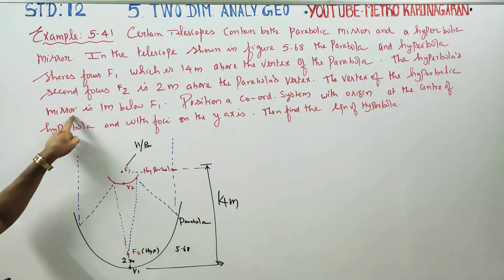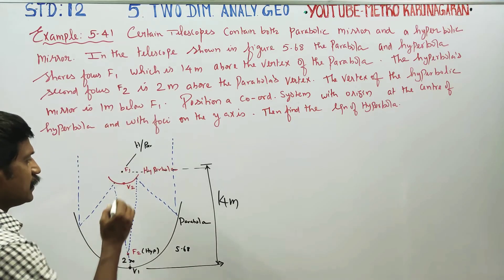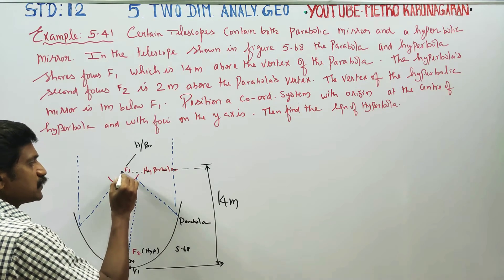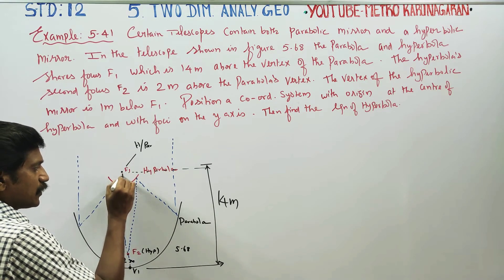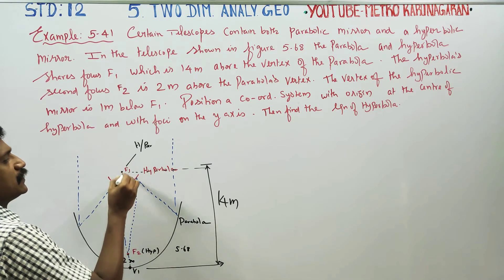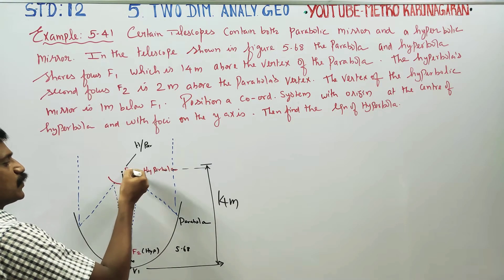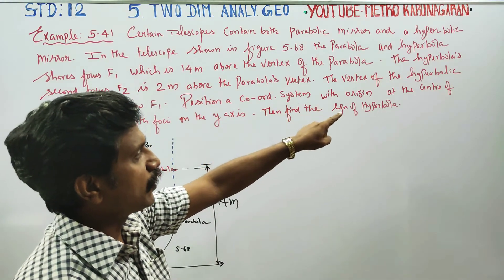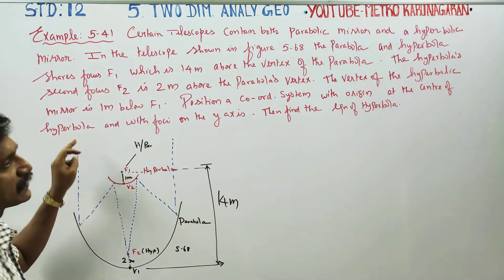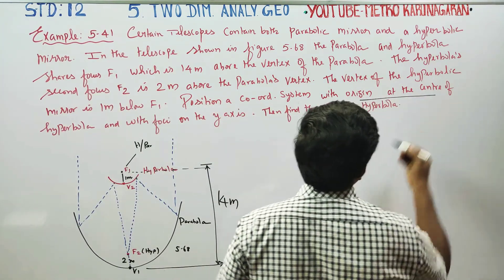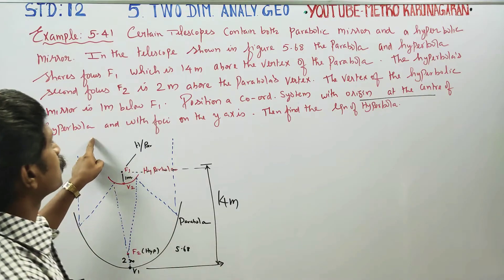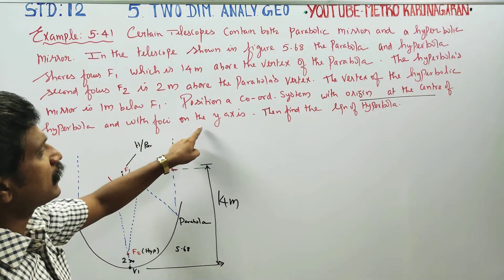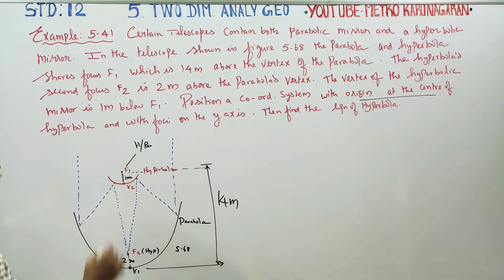The vertex of the parabola is 1 meter below the focus F1. We position the coordinate system with the origin at the center of the hyperbola, with the foci on the y-axis.